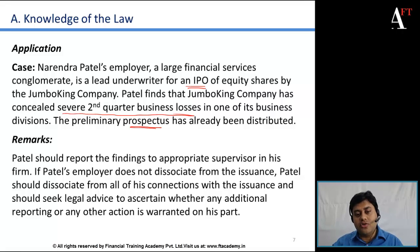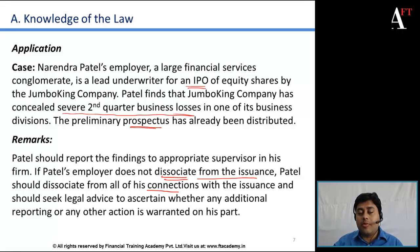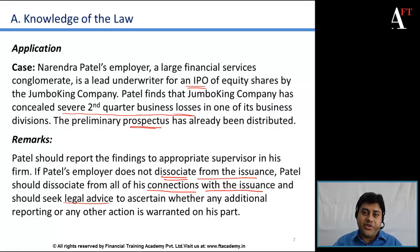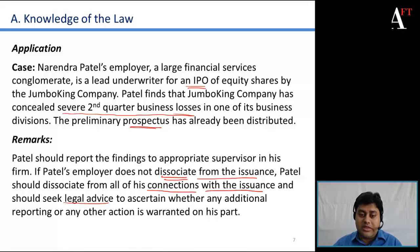So what are the appropriate actions Narendra Patel should take? Patel should report the findings to an appropriate supervisor in his company. If Patel's firm still does not disassociate from such an issuance, the appropriate action for Patel is to disassociate from any relation or connection with the issuance and further seek legal advice to decide whether any additional reporting or other action is warranted. Clearly, a firm following proper ethics would disassociate itself from the underwriting agreement of the Jumbo King IPO on Patel's report — but if not, these are the actions Patel needs to take.